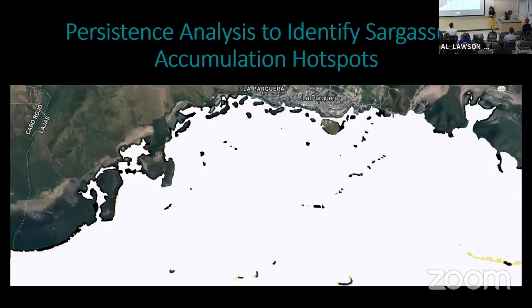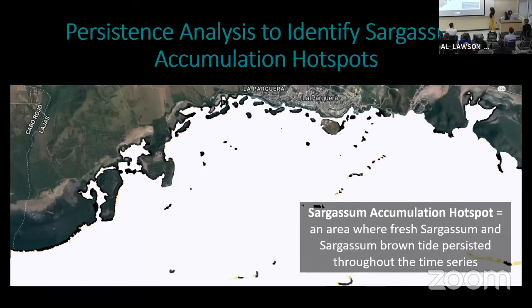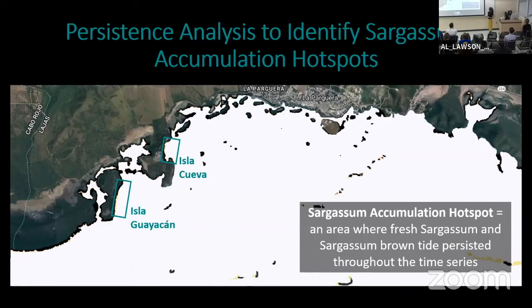Now let's look at the spatial and temporal dynamics. We conducted a persistence analysis, assessing which was the most frequent class throughout the whole time series in each pixel, in order to identify where the hotspots of accumulation were. We defined a hotspot of sargassum accumulation as an area where fresh sargassum and sargassum brown type persisted throughout the whole time series. We were able to identify those areas — two hotspots that are persistent throughout the whole time series.